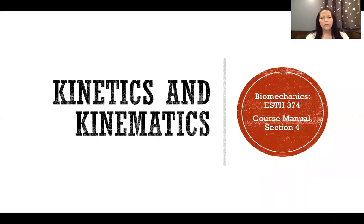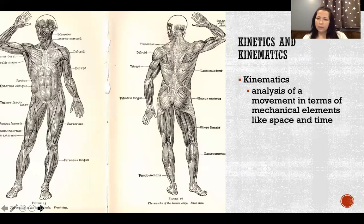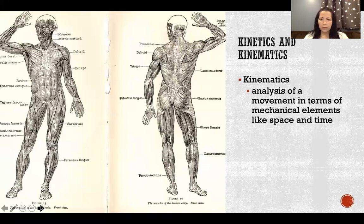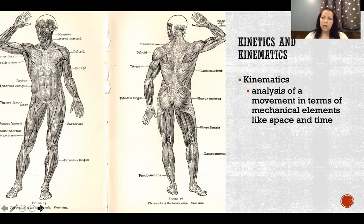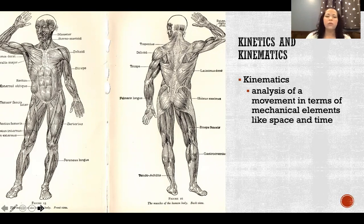In this video, I'm going to talk about kinematics and kinetics, our two aspects of dynamics. Kinematics is the analysis of movement in terms of mechanical elements like space and time. So all of the joint actions that we've been talking about so far, that's all been kinematics — analysis of movement in space and time. If we look at the glenohumeral joint, we're talking about the humerus moving through space in this direction, taking this long to complete. That's all kinematics — what that movement looks like as the body moves through space and time.